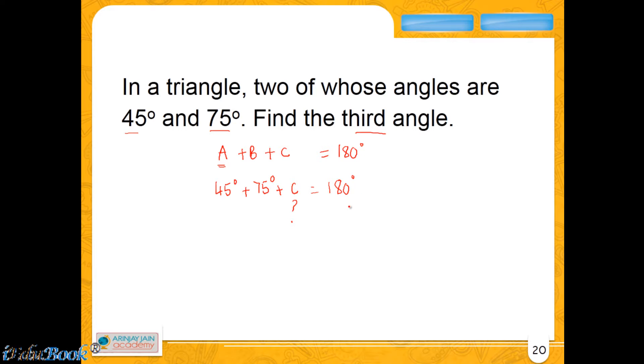So C is nothing but 180 degrees minus, if you move this to the other side of the equation, you get 45. So 180 minus 75 plus 45, how much would that be? 120 will give you 60 degrees. So the value of the third angle will be 60 degrees.